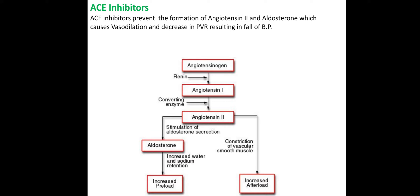When renal ischemia is produced, renin — a proteolytic enzyme — is released. Renin acts on angiotensinogen from liver cells and converts it to angiotensin 1. Angiotensin 1 is then converted to angiotensin 2 with the help of the angiotensin converting enzyme, and angiotensin 2 is produced in the lungs.